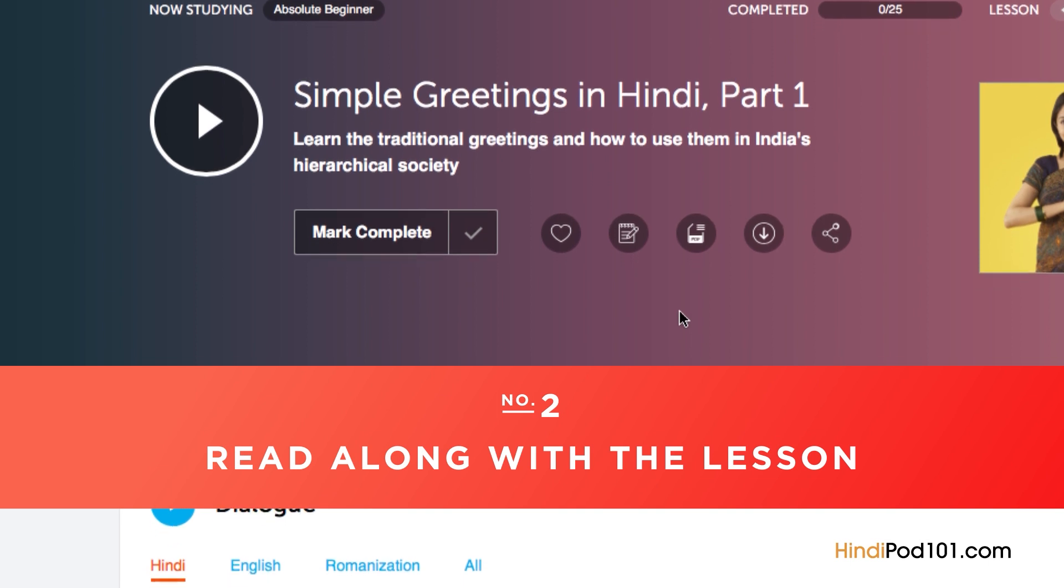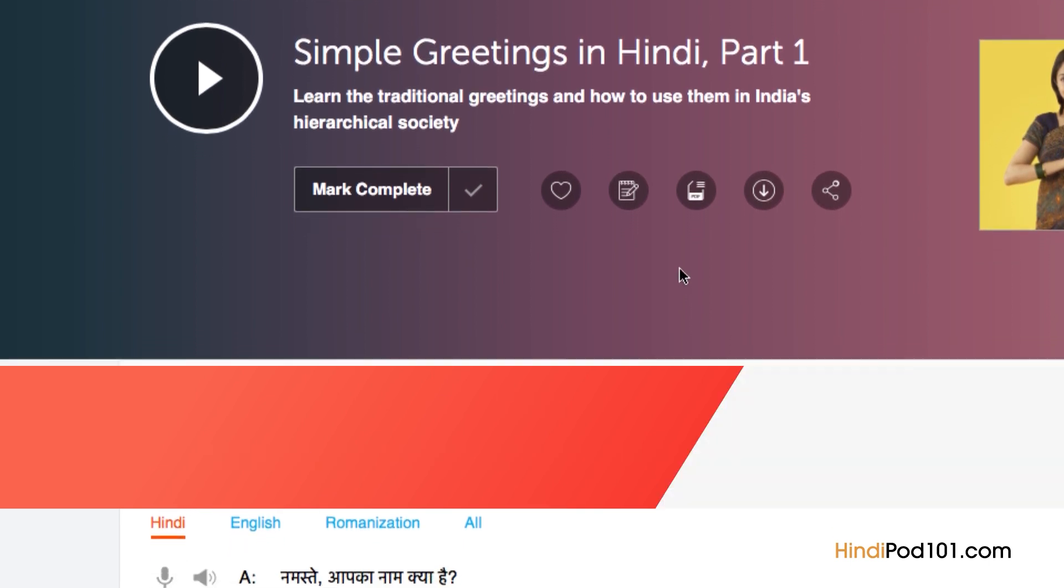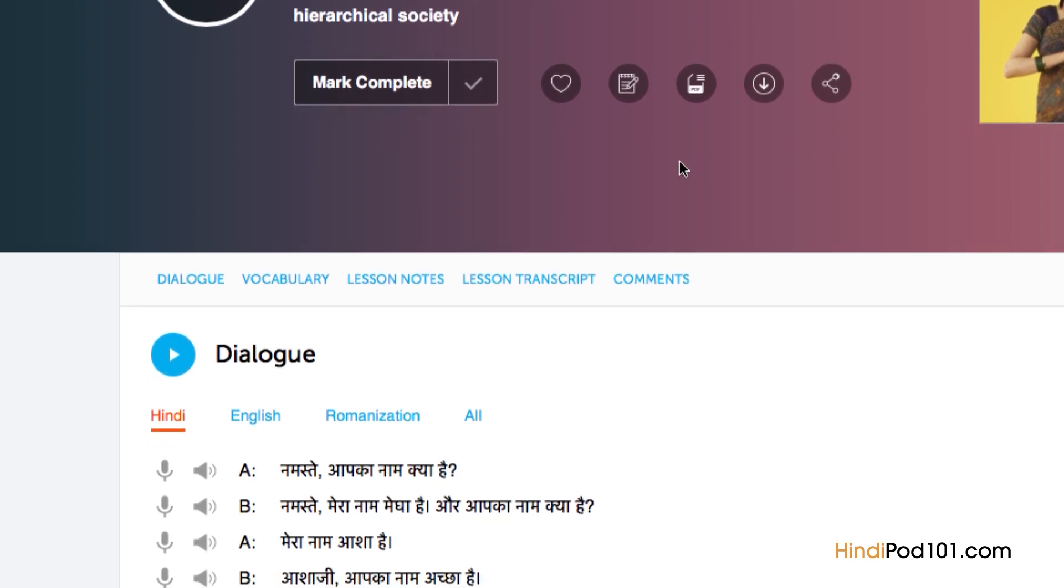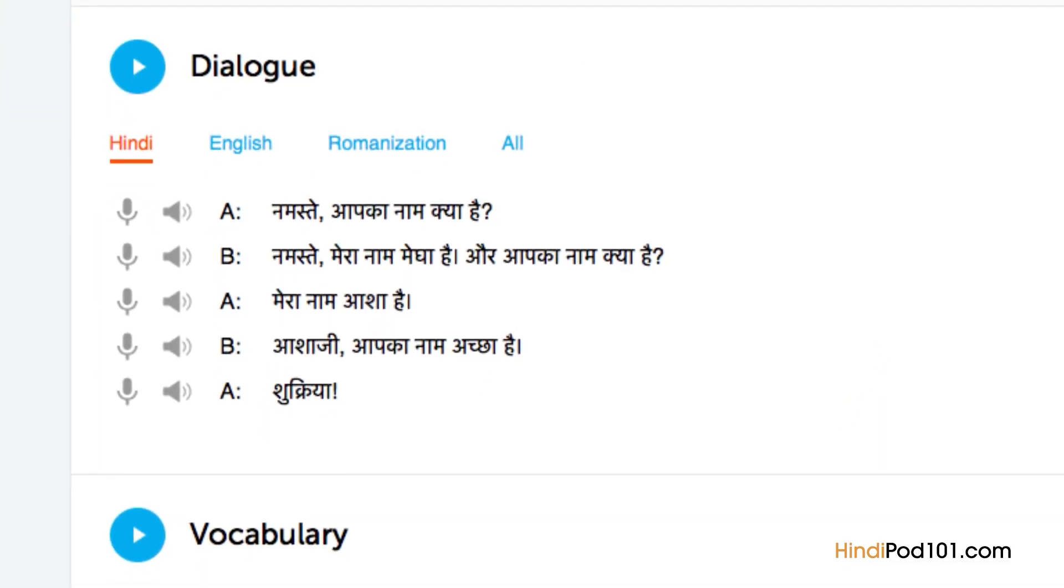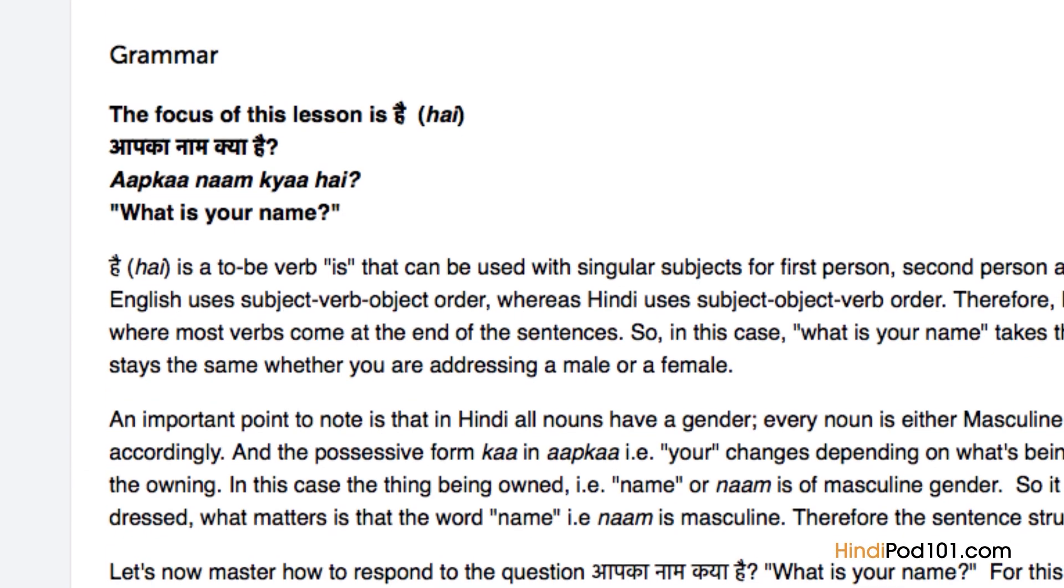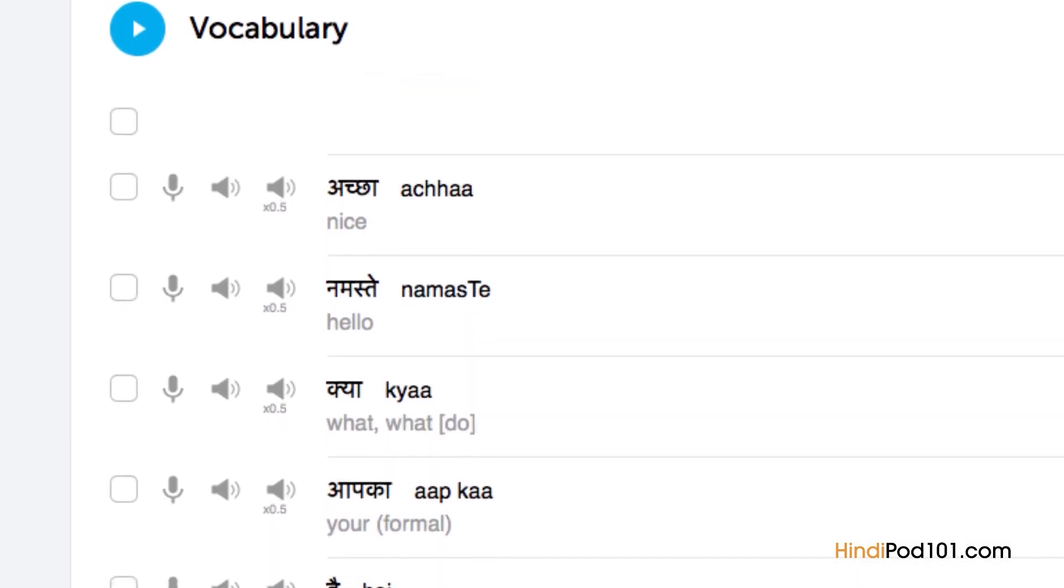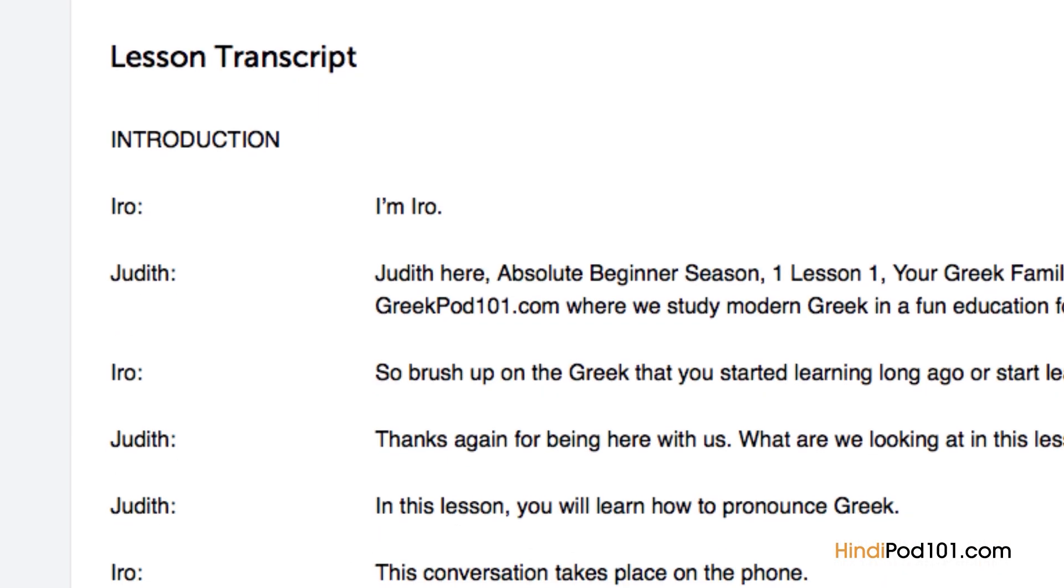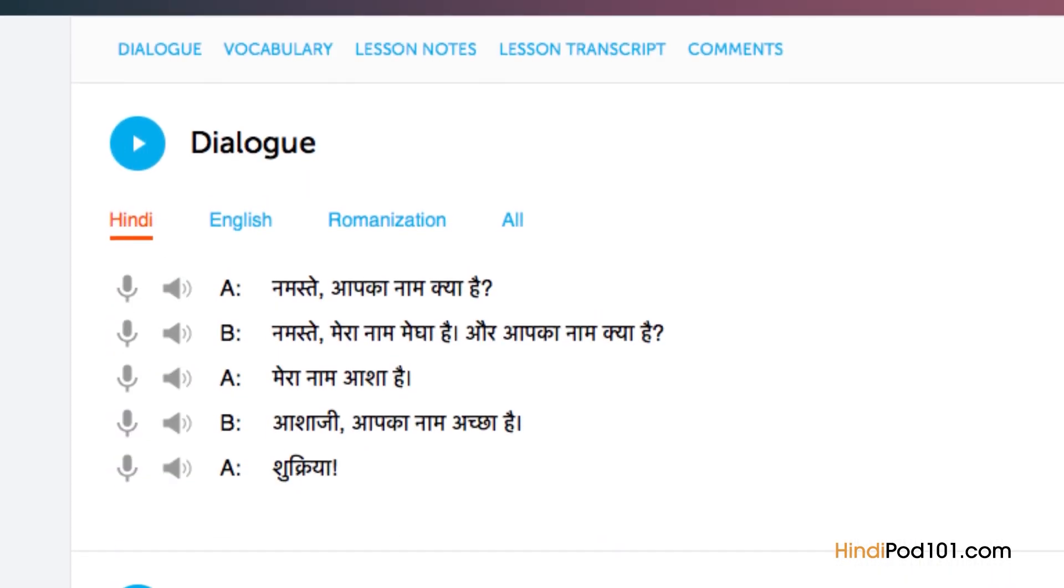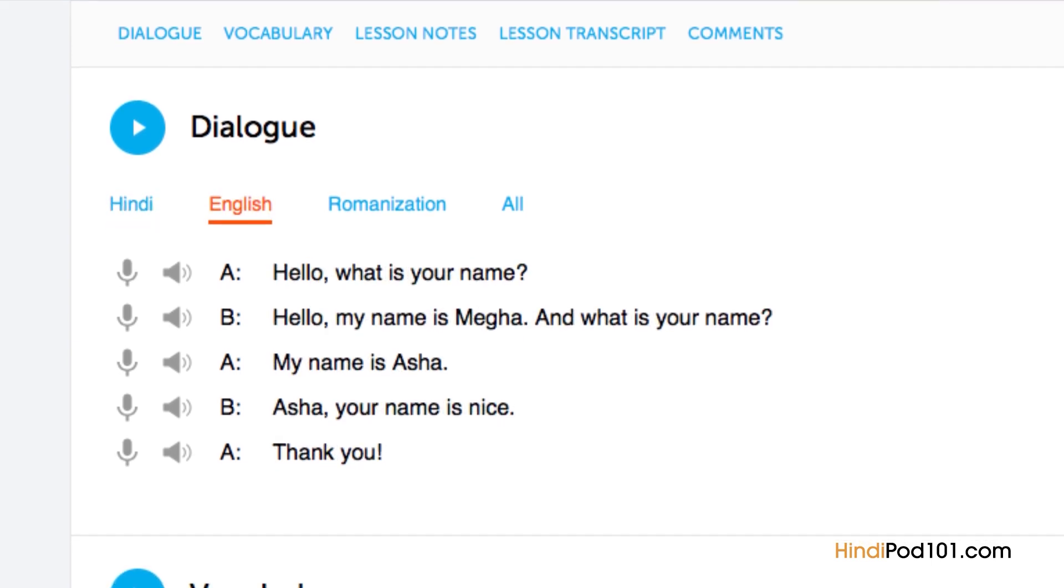Number two, read along with a lesson. You can read along with the lesson notes or lesson transcript. These come with every lesson. The lesson notes provide you with the dialogue for the scene taught in the lesson along with translations, a more in-depth explanation of the grammar and culture, and even vocab and sample sentences. The lesson transcript is the full word-for-word transcript of everything you hear in the lesson. And the dialogue study tool provides you with the audio for the lesson dialogue along with the translations.